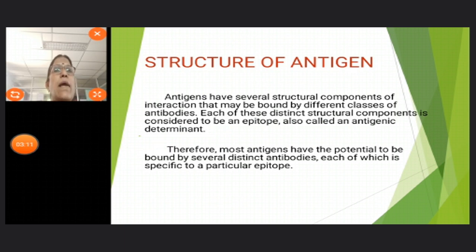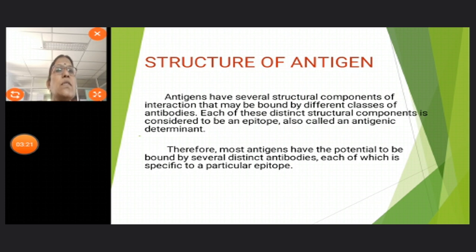Structure of an antigen. Antigens have several structural components of interaction that may be bound by different classes of antibodies. Each of these distinct structural components is considered to be an epitope, also called an antigenic determinant.